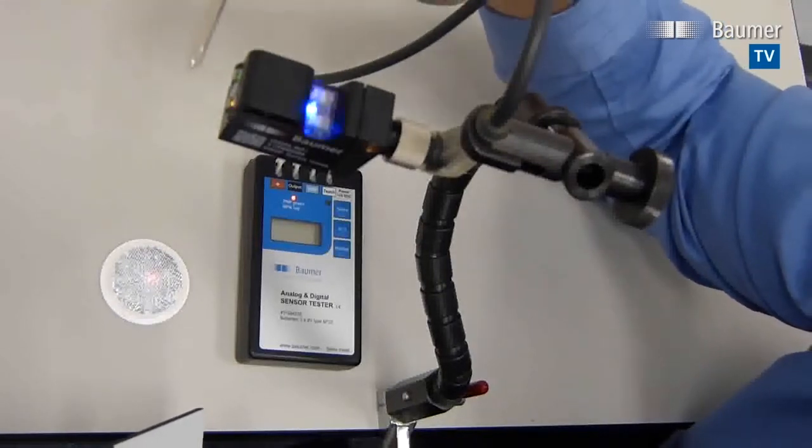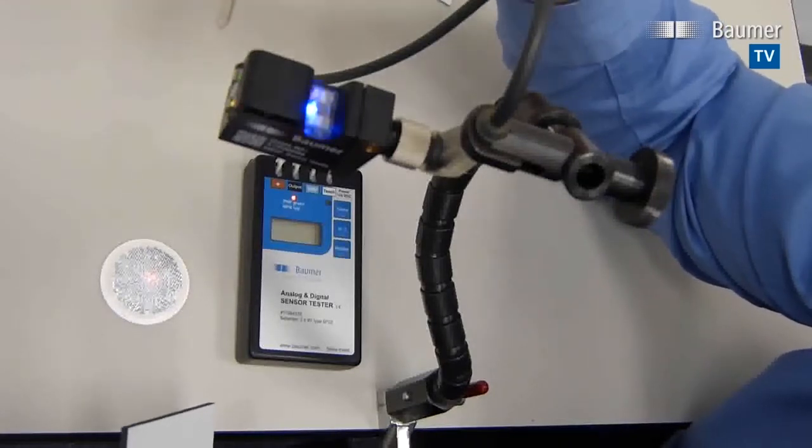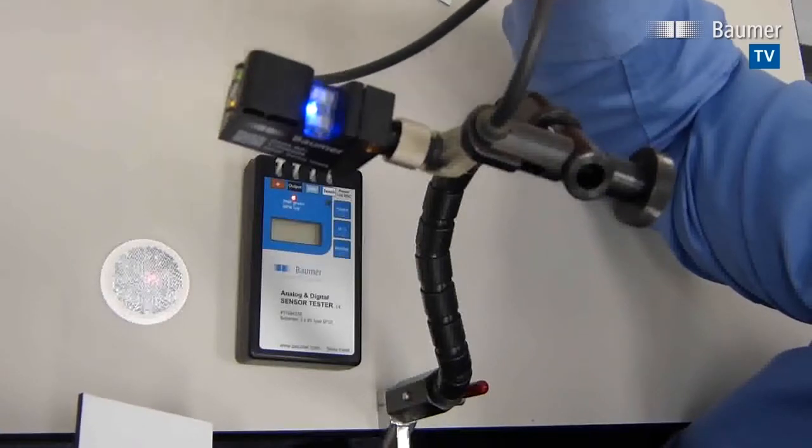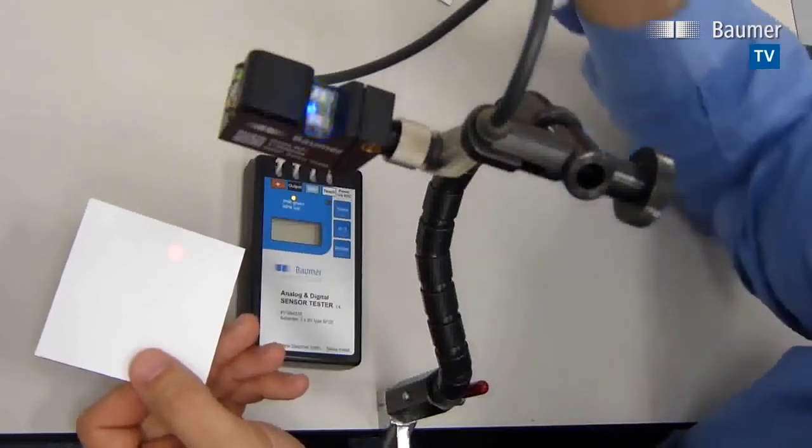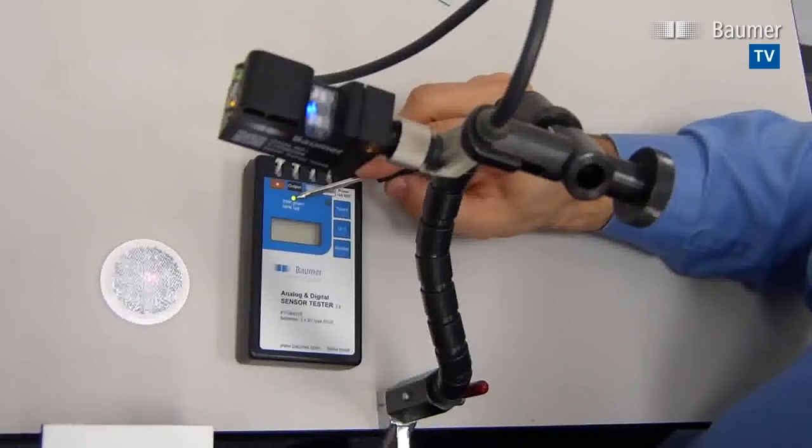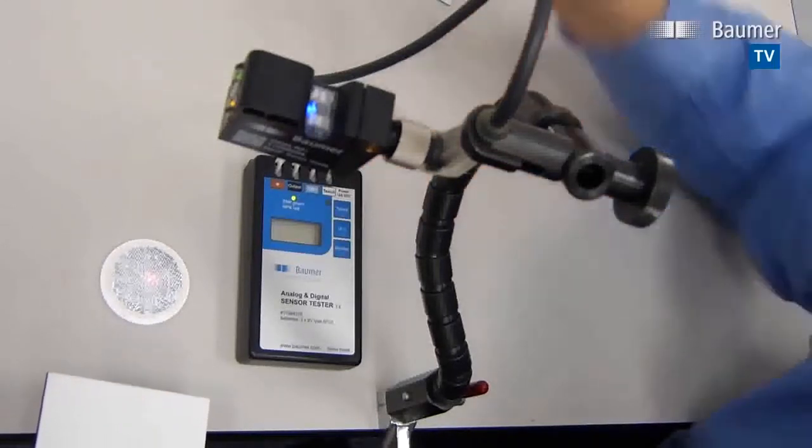Again, we get into level 1 teaching. We hold the QTeach until it flashes once per second. In this case, we can show it the reflector and then show it the object, and it'll change its light-dark-operate status. Here, there's a green light, which indicates that there's a PNP output when there's no object.